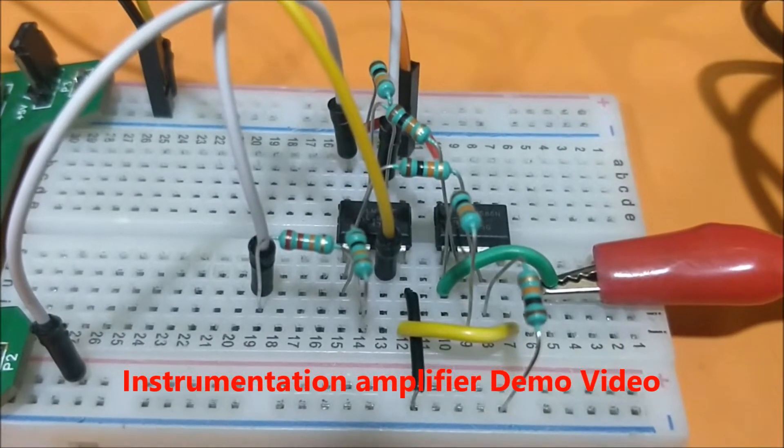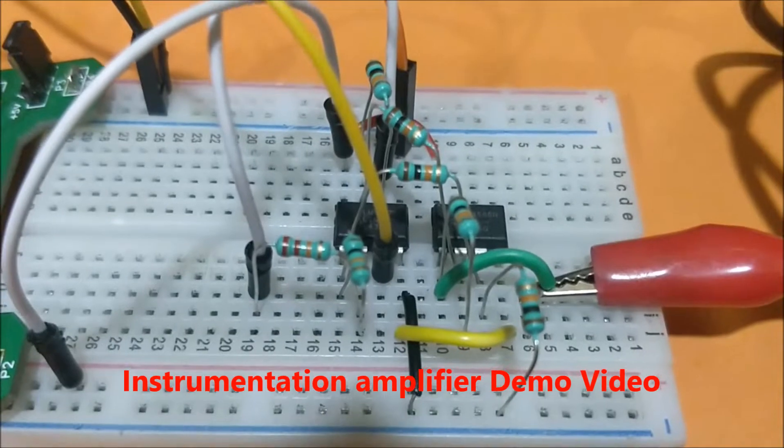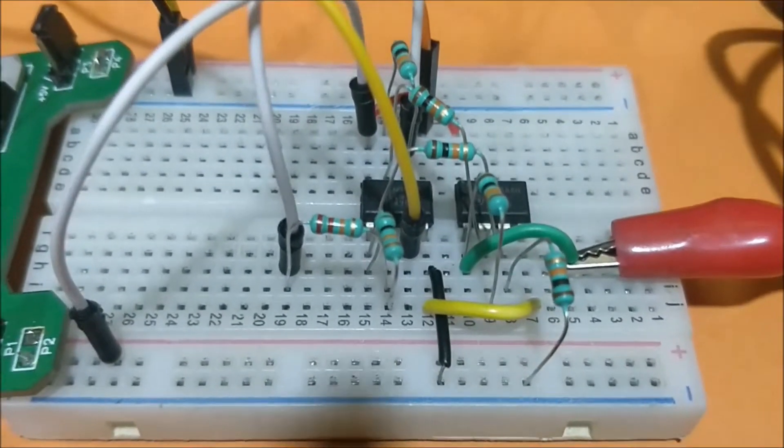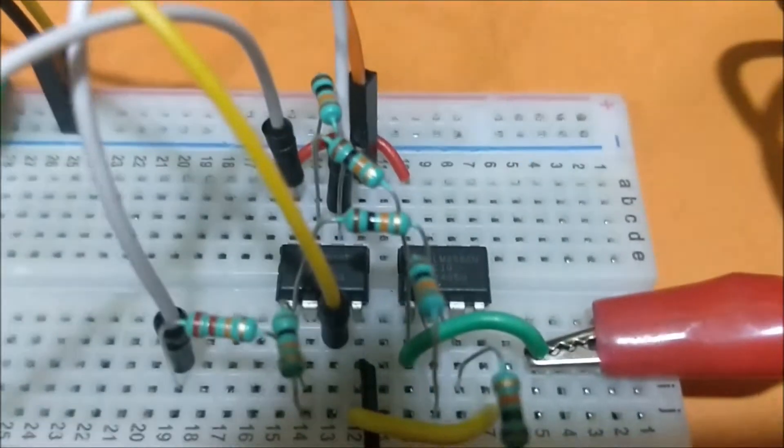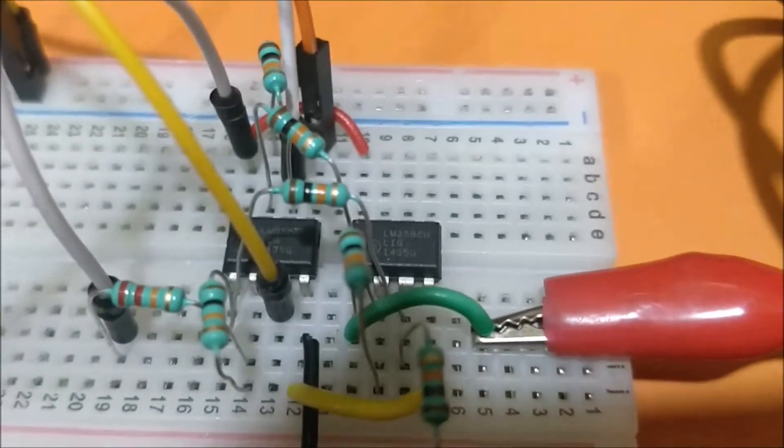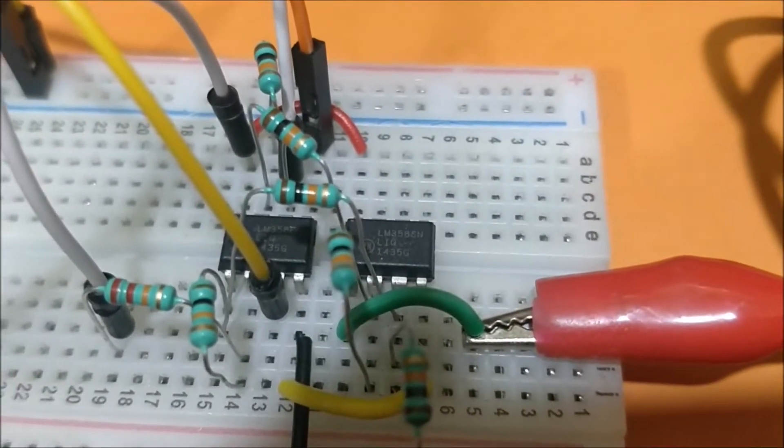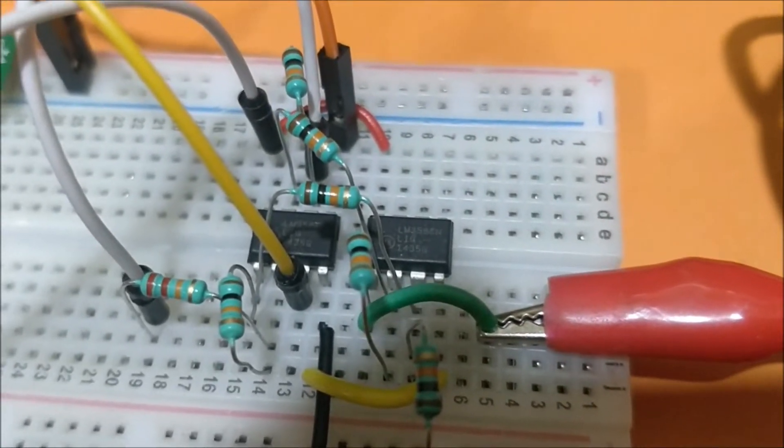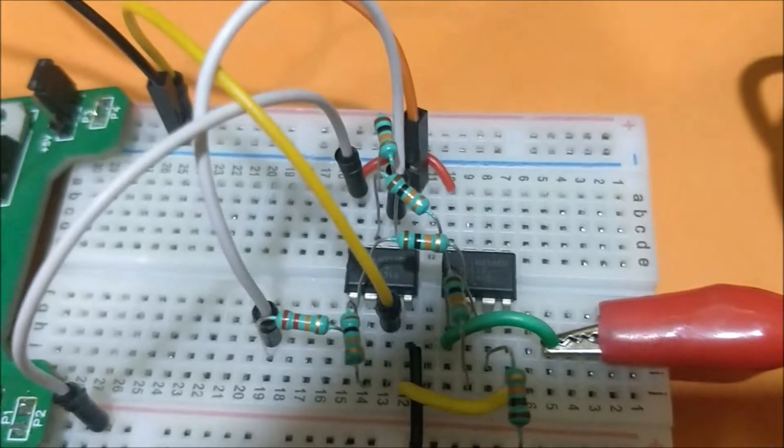Hello all, welcome to another video of Circuit Digest. In this video I'll show you how we can build an instrumentation amplifier using op-amps. Here I have used three op-amps—three op-amp packages using the LM358 IC. Each IC has two op-amps inside them, so I have used two op-amps of the first IC and one op-amp of the second IC.